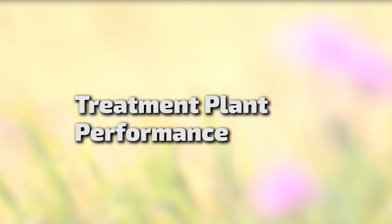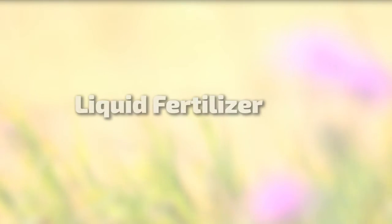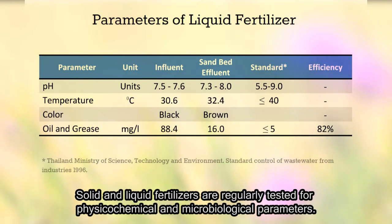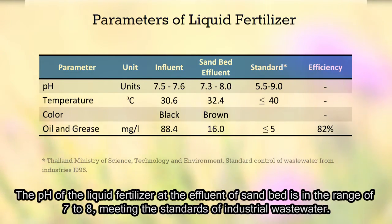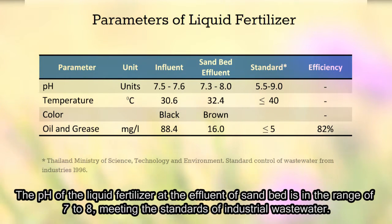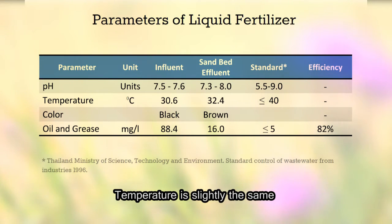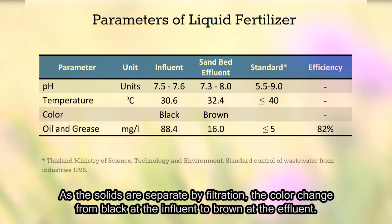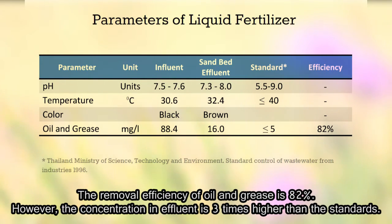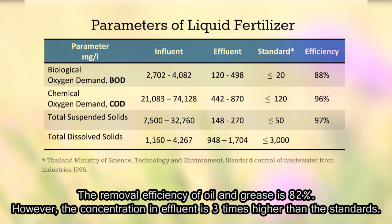Treatment plant performance — liquid fertilizer. Solid and liquid fertilizers are regularly tested for physico-chemical and microbiological parameters. The pH of the liquid fertilizer at the effluent of the sand bed is in the range of 7 to 8, meeting the standards of industrial wastewater. As solids are separated by filtration, the color changes from black at the influent to brown at the effluent. The removal efficiency of oil and grease is 82 percent; however, the concentration in the effluent is three times higher than the standards.